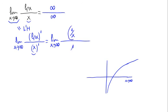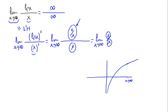So 1/x divided by 1 is 1 divided by x. This gives us the limit when x approaches to infinity of 1 divided by x. Now we have 1 divided by something that is very large, so this is zero — and this is the result of the limit.